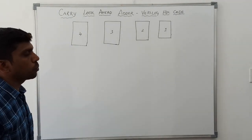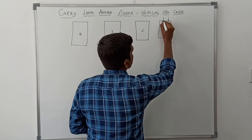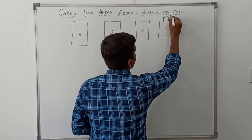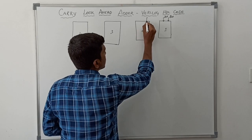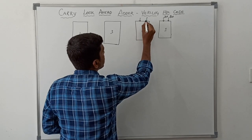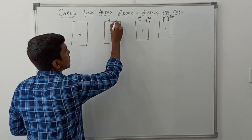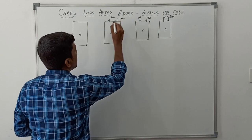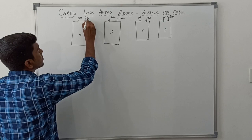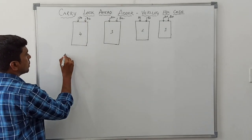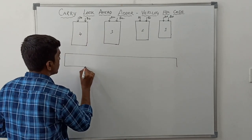Here I am taking four 1-bit adder circuits. The first input is A0 and B0, given to the first adder circuit. The next inputs are A1, B1, then A2, B2, and then A3, B3. At the bottom of the circuit is the carry lookahead generator.